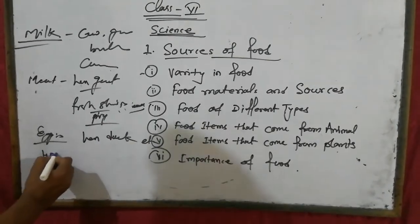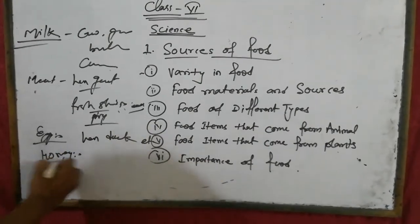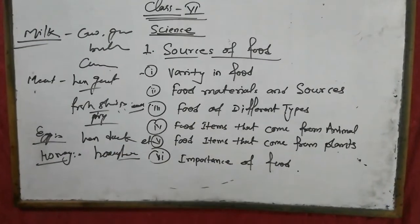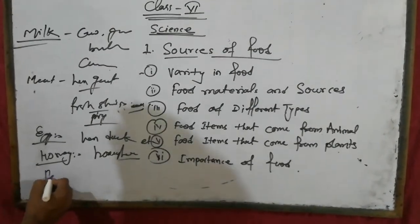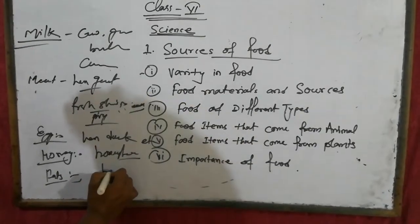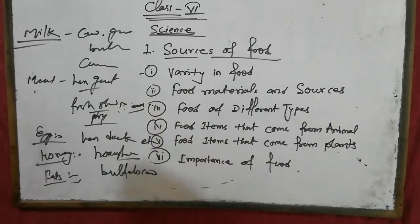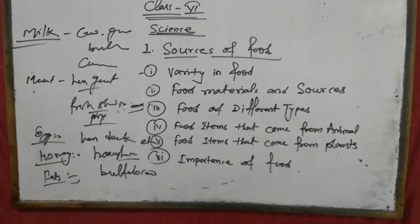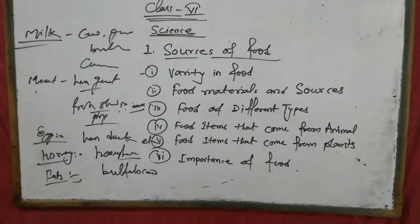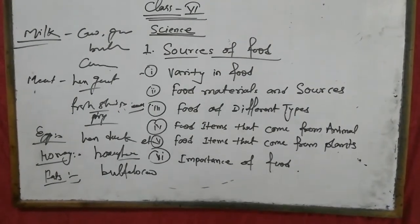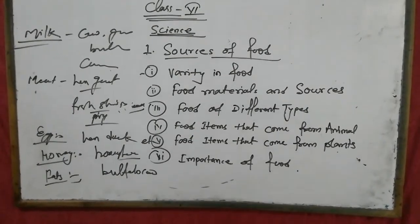Now we are talking about honey. Honey comes from honeybee — it comes from only the honeybee. So to summarize: milk comes from cow, goat, buffalo, camel, sheep. Meat comes from hen, goat, fish, sheep. Egg comes from hen, duck. Honey comes from honeybee. And fats come from buffalo and cow.